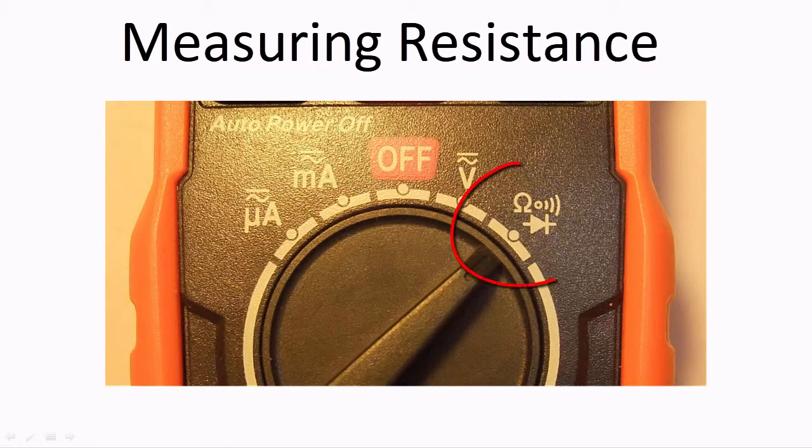For an auto-ranging meter, just set the rotary switch to ohms. You don't need to worry about selecting range because there aren't any to choose from.